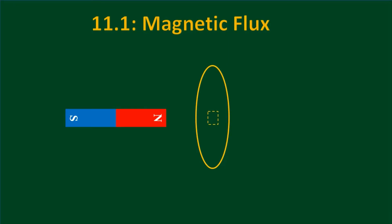Here's a magnet and a loop of wire. The area between the loop of wire is a 2D surface. Flux is based on two vectors: the magnetic field and the area vector. An area vector comes perpendicularly out of the area — dA means a small piece of the area vector. The magnetic field comes out of the north pole, so B passes through the area vector, meaning we have a flux.